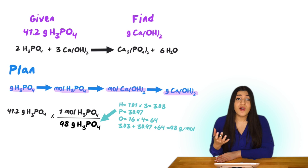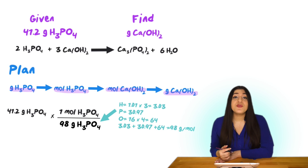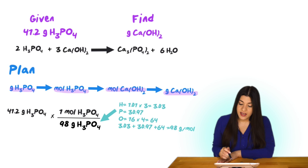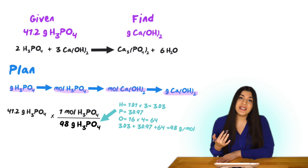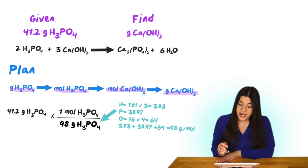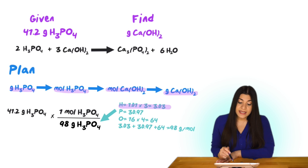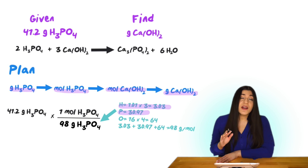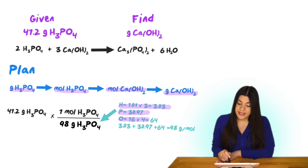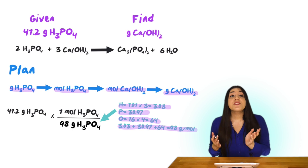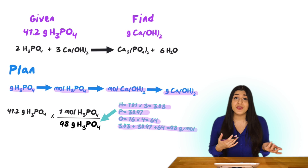Starting with grams of phosphoric acid, we need the molar mass of phosphoric acid. Hydrogen has a mass of 1.01, multiplied by 3 gives 3.03. Phosphorus has a mass of 30.97. Oxygen has a mass of 16, and there are four oxygens in phosphoric acid, so multiplied by 4 gives 64. Adding all these masses up gives us a molar mass of 98 grams per mole for phosphoric acid.